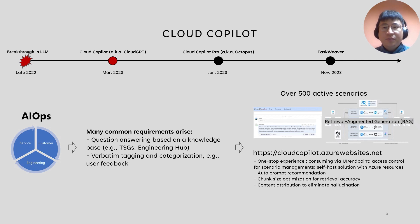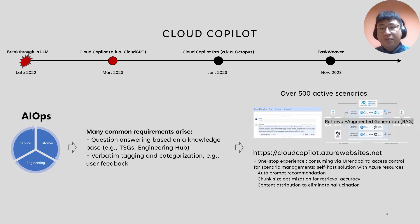A lot of teams were trying to build a question-answering system based on their own domain knowledge, such as troubleshooting guides or engineering docs. Another common requirement is to have the model type or categorize verbatims, for example user feedbacks. Although existing libraries like LangChain had provided solutions, we still see many challenges, especially for people who are not familiar with LLM development and prompt engineering. This motivated us to build a common platform to support those requirements. We call it CloudCopilot.